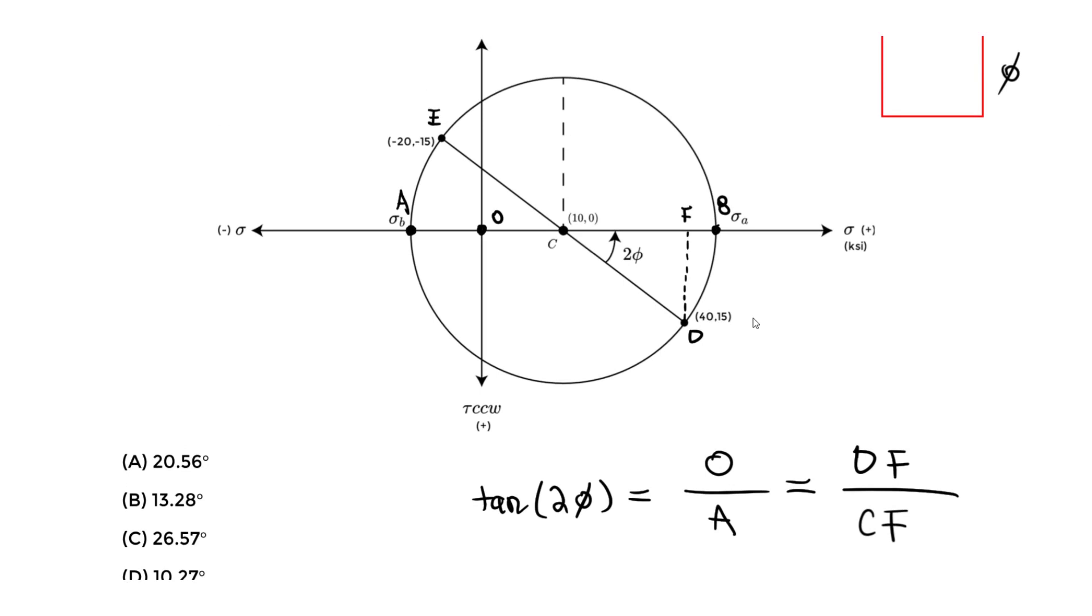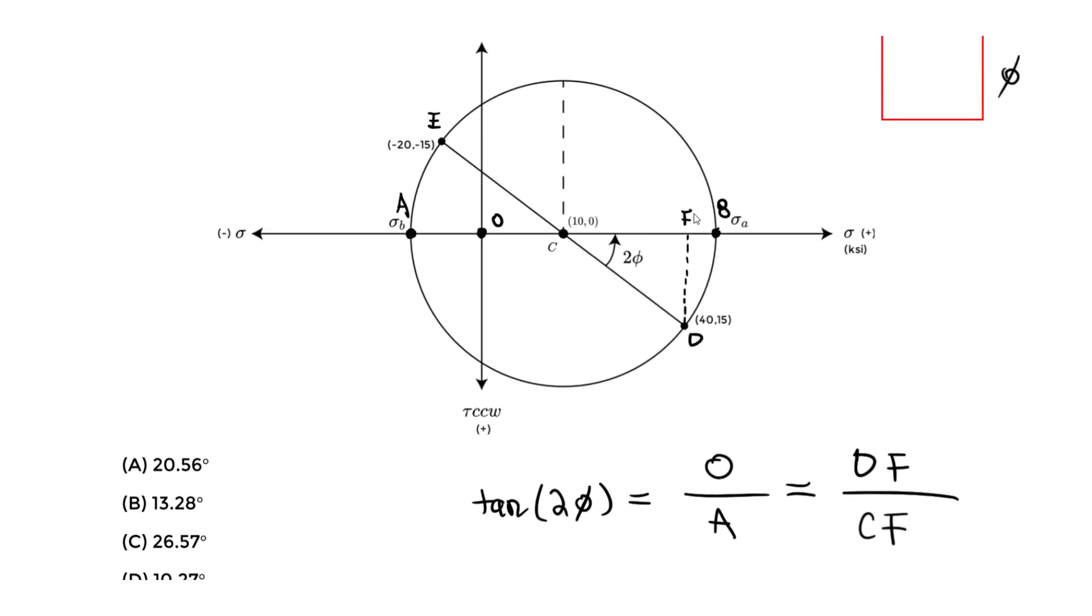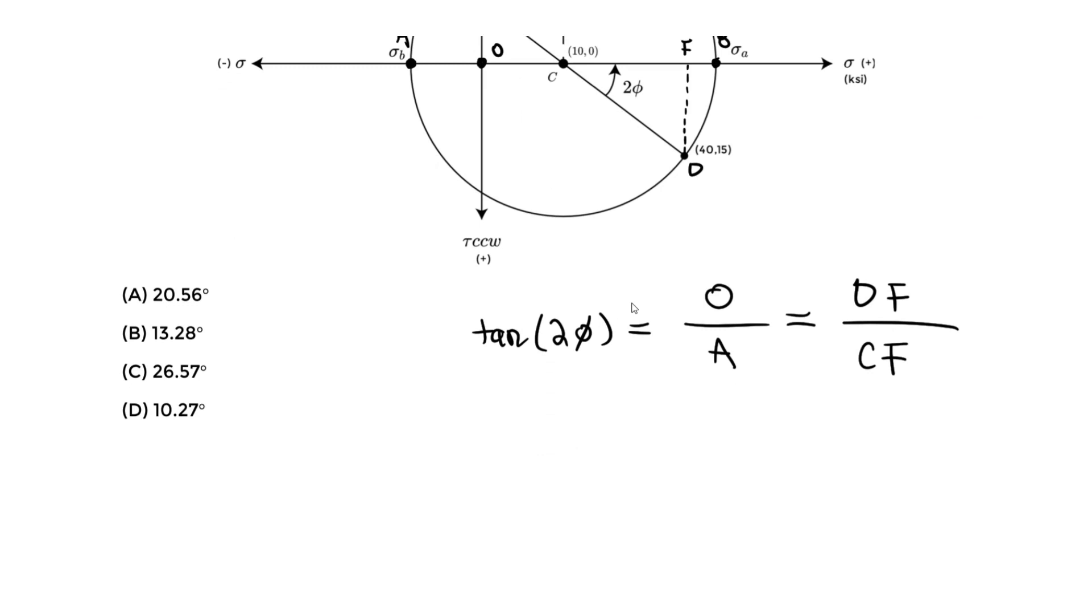So what's the opposite side? What do we think is the opposite side? So this one is quite simple. It's just the Y. Because we're at this point, it's just the change in Y from F to D. So it's just going to be 15. So the opposite is going to be just 15, which is our DF. So we do tan of 2φ equals 15 for DF, which is the opposite side.